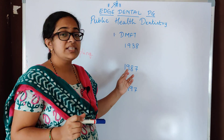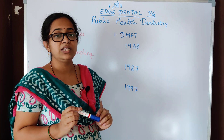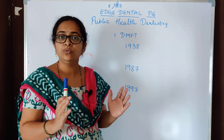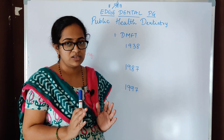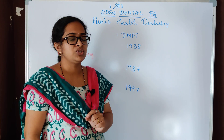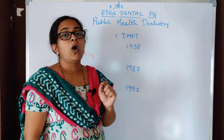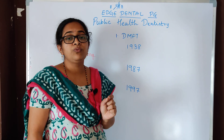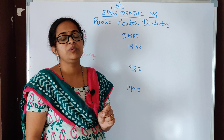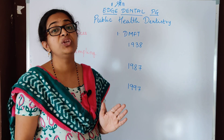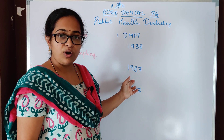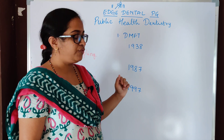In 1987, important modifications were included. All third molars were to be included, meaning 32 teeth had to be considered. Temporary restorations were considered to be D. Also, chalky white lesions or incipient lesions were considered to be normal. That was the important modification of 1987.